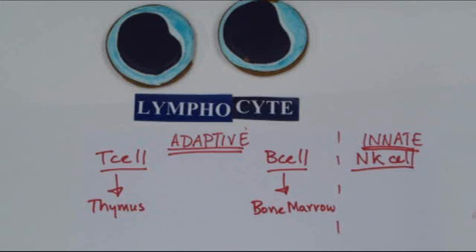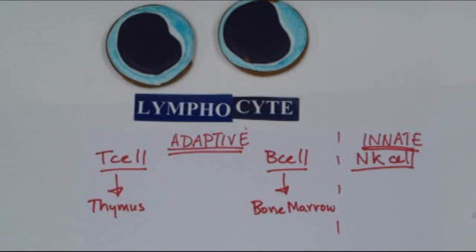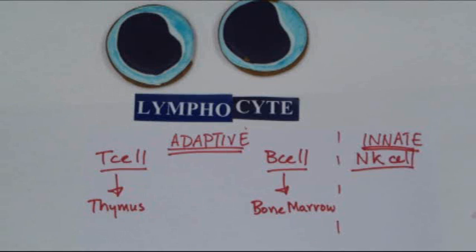These cells arose from the bone marrow and, like the monocyte, they have just one nucleus. These cells can be classified in three different ways: they can be considered a T cell, which arises from the bone marrow but matures in the thymus; a B cell, which arises from the bone marrow and matures in the bone marrow; or a natural killer cell, also known as an NK cell.